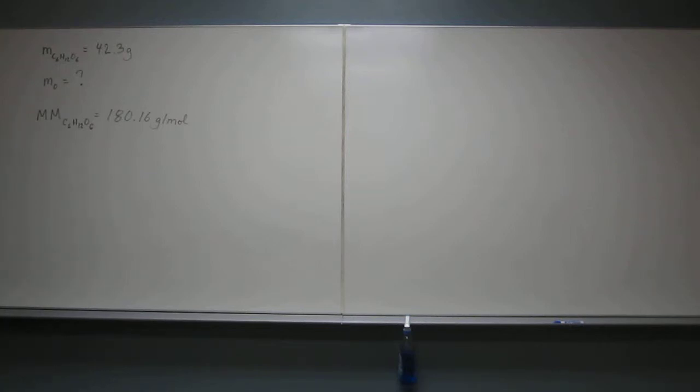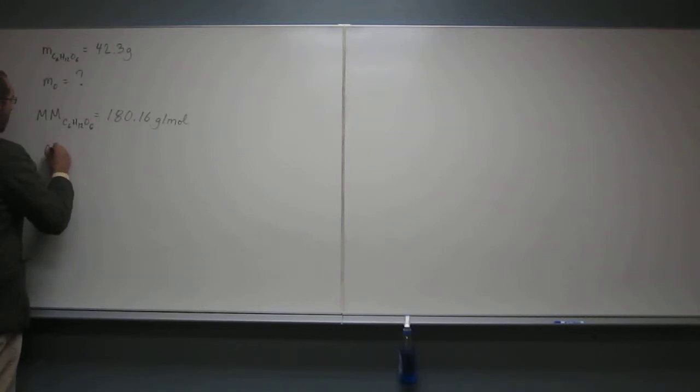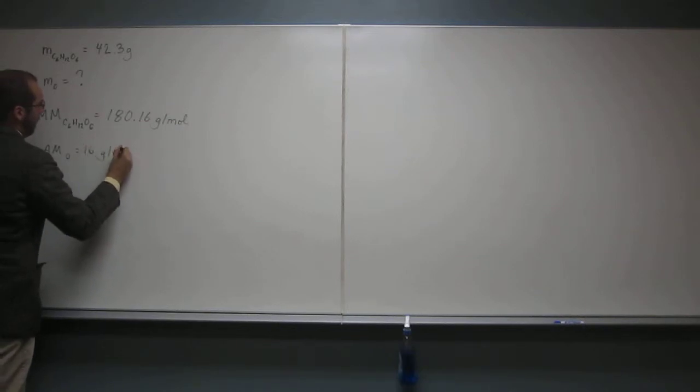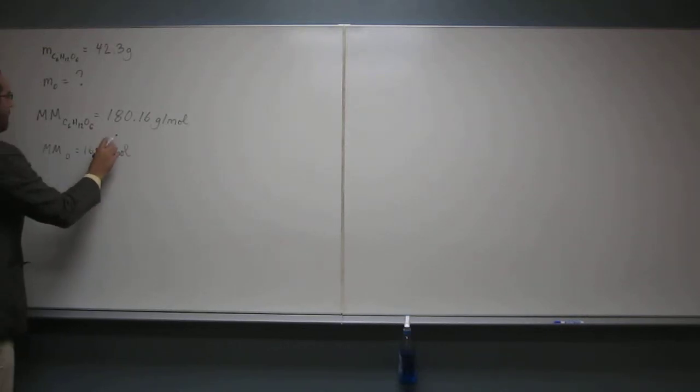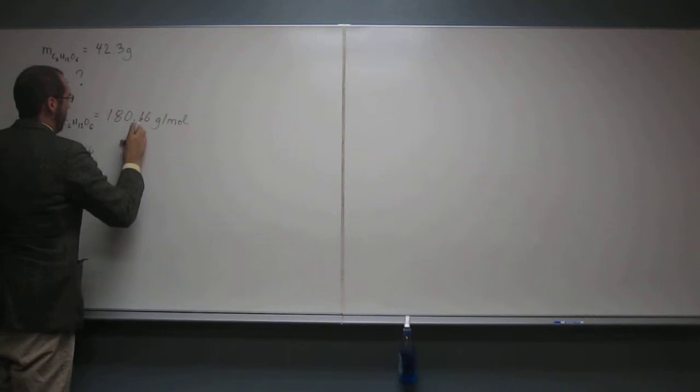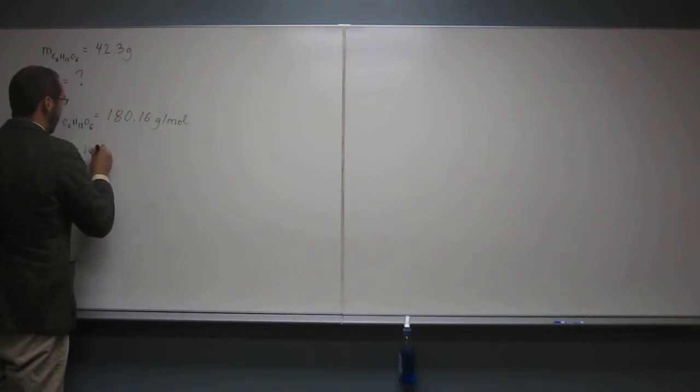The other thing, if we look at the periodic table over there, it says that the atomic mass or the atomic weight of oxygen is going to be... 16, we'll say the molar mass of oxygen is 16.00 grams per mole, okay?